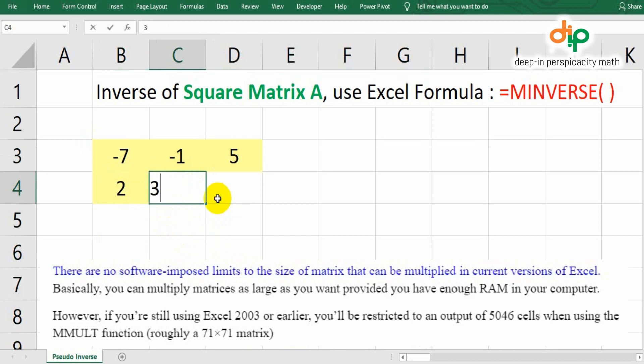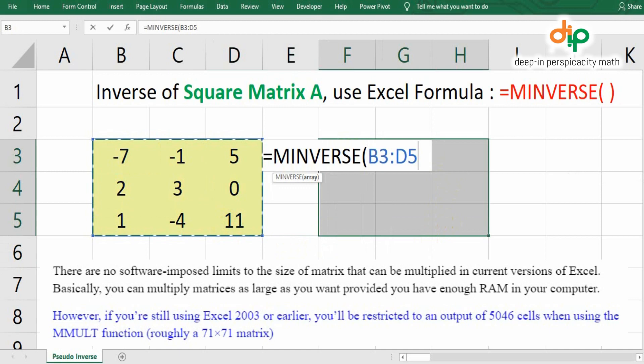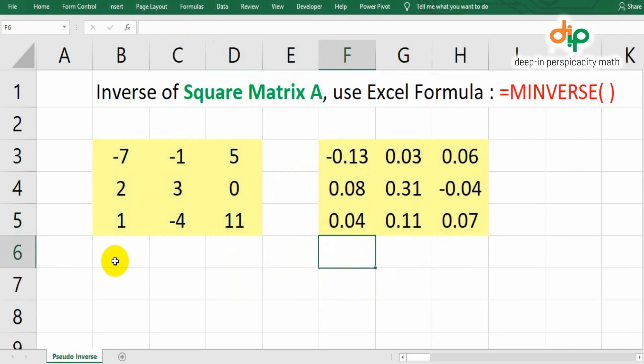There are no software imposed limits to the size of matrix that can be multiplied in current versions of Excel. Basically, you can multiply matrices as large as you want provided you have enough RAM in your computer. However, if you are still using Excel 2003 or earlier, you will be restricted to an output of 5046 cells when using the MMULT function, roughly a 71 by 71 matrix.